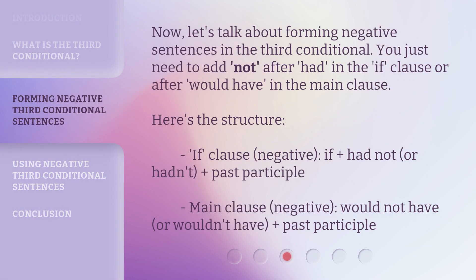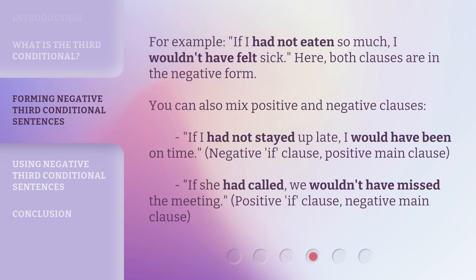Now, let's talk about forming negative sentences in the third conditional. You just need to add 'not' after 'had' in the if clause, or after 'would have' in the main clause. Here's the structure — if clause (negative): if plus had not, or hadn't, plus past participle; main clause (negative): would not have, or wouldn't have, plus past participle. For example: if I had not eaten so much, I wouldn't have felt sick. Here, both clauses are in the negative form.